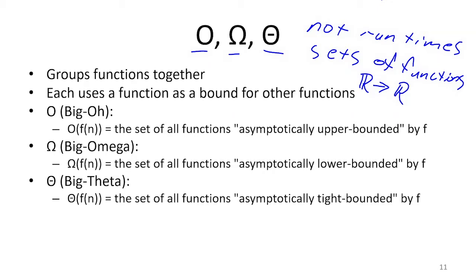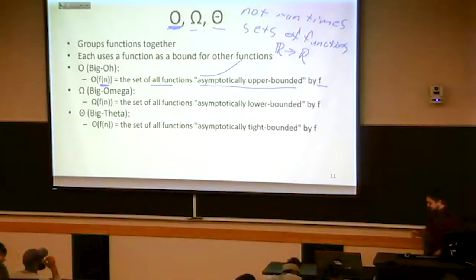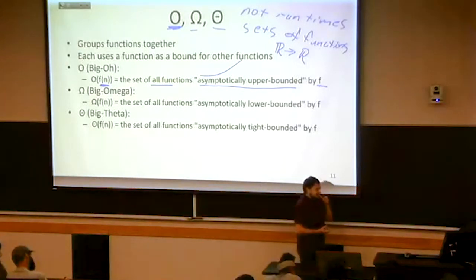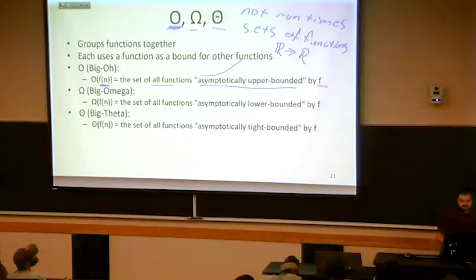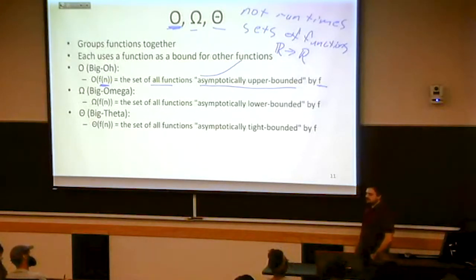So when I talk about say big O of some function, say big O F of n, this says a set of all of the functions that are asymptotically upper bounded by F. So when we say asymptotically, this is talking about the trend as the input gets larger and larger and larger. How does that trend? And how does it trend specifically compared to F? So F is going to have some trend of larger and larger and larger as its inputs get larger. And any function that kind of eventually becomes upper bounded by F belongs to the set big O of F, is how big O works.